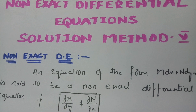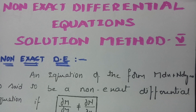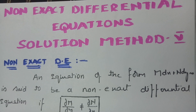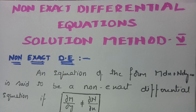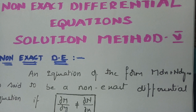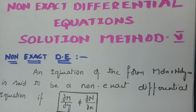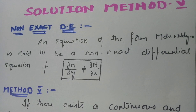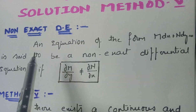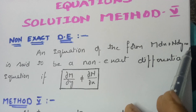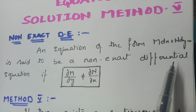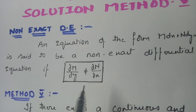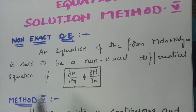This is solution method 5 for solving non-exact differential equations — the last solution method. A differential equation of the form M dx + N dy = 0 is said to be a non-exact differential equation if dM/dy is not equal to dN/dx. If this condition is satisfied, then the given equation is said to be a non-exact differential equation.